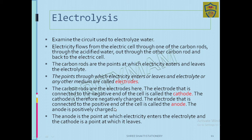In the circuit used to electrolyze water, electricity flows from the electric cell through one carbon rod, through the acidified water, out through the other carbon rod, and back to the electric cell. That is the complete path through which electricity passes.